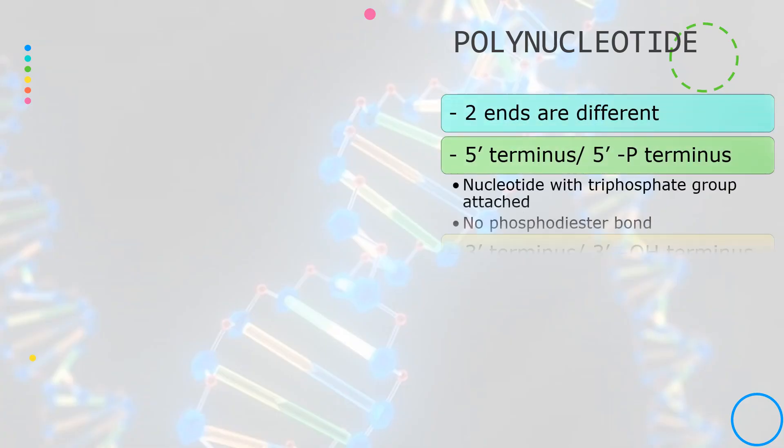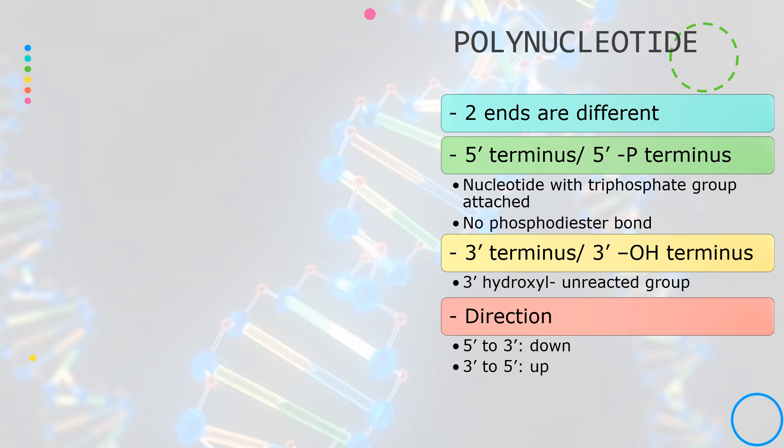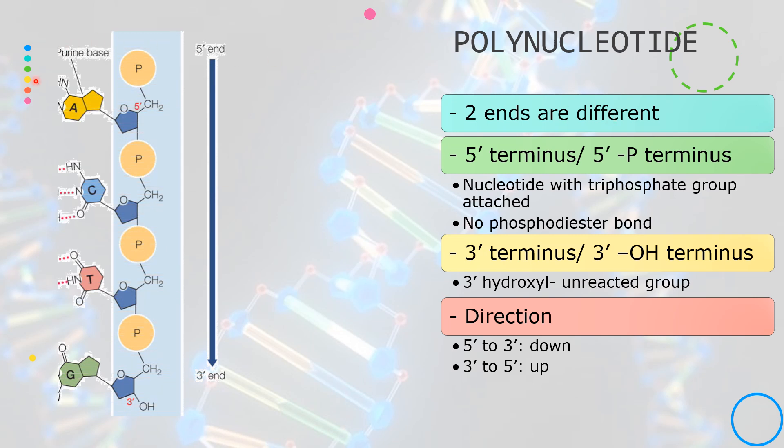An important feature of the polynucleotide is that the two ends of the molecule are not the same. The top of this polynucleotide ends with a triphosphate group attached to the 5' carbon. This has not yet participated in the phosphodiester bond.